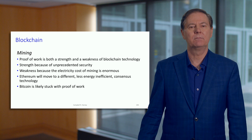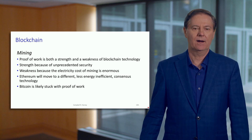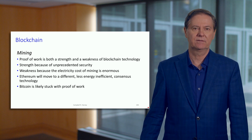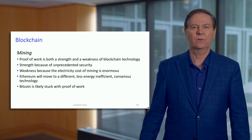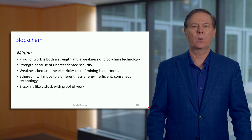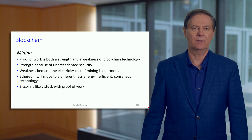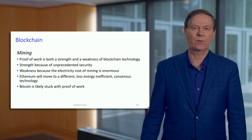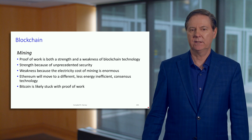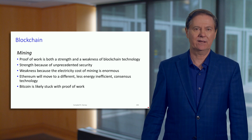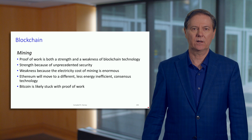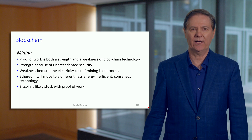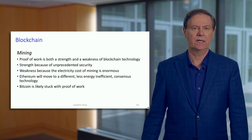Ethereum will migrate to a different, less energy-inefficient technology for their consensus — moving from proof of work to a proof of stake mechanism, which will likely happen in 2022. That will solve the environmental problem for Ethereum. But Bitcoin is a different story — it's likely stuck in the proof of work mode, and I'll have more to talk about in terms of this risk to Bitcoin in future modules.